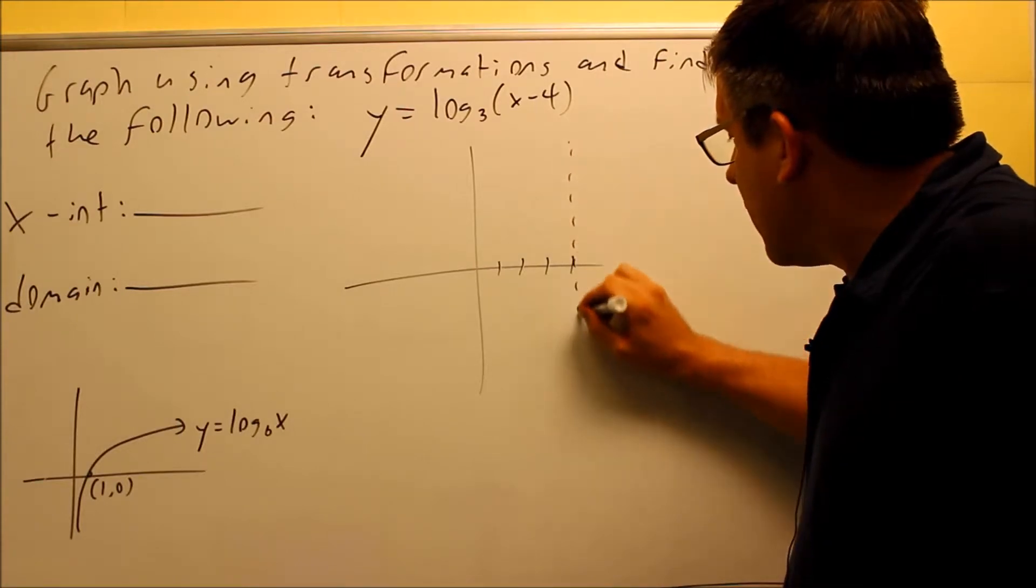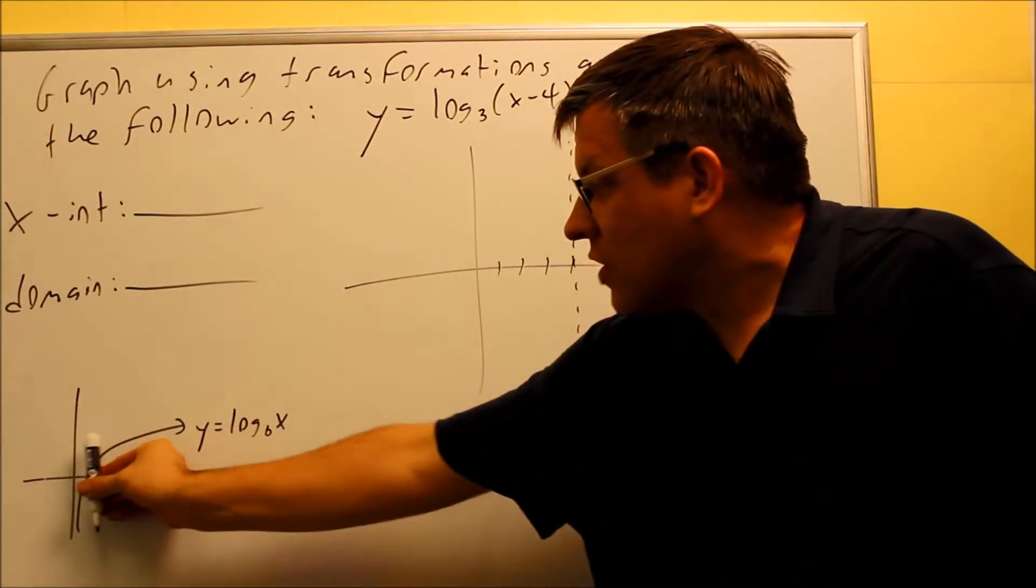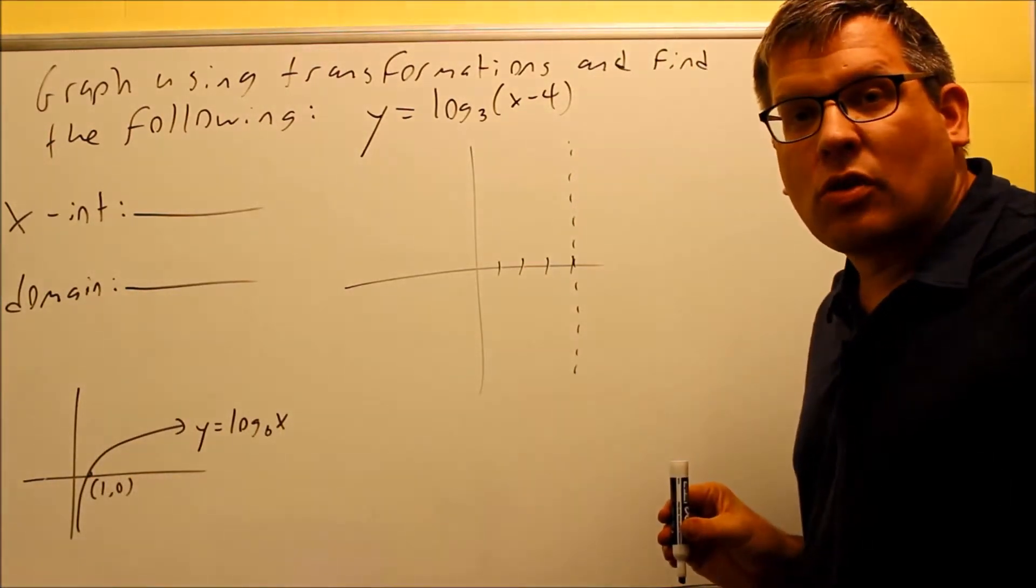And I'm going to draw a dotted line that represents our new vertical asymptote. The graph is being shifted this way, four places to the right.